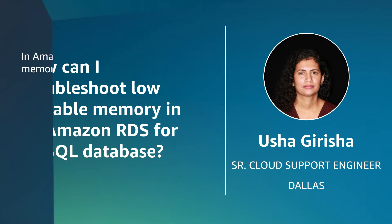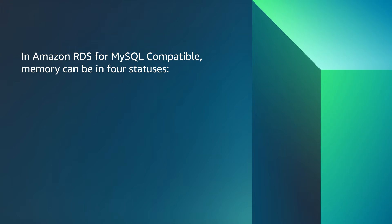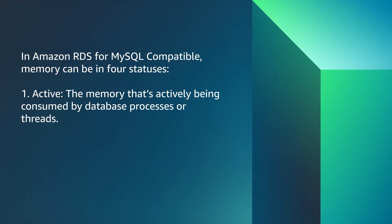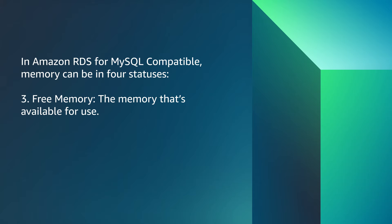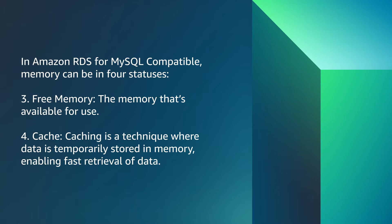Let's get started. In Amazon RDS for MySQL Compatible, memory can be in four statuses. Active — the memory that's actively being consumed by database processes or threads. Buffer — a temporary space in memory used to hold a block of data. Free memory — the memory that's available for use. Cache — a technique where data is temporarily stored in memory, enabling fast retrieval of data.